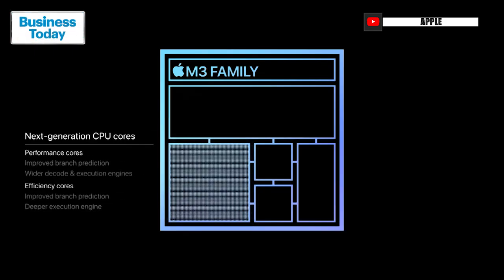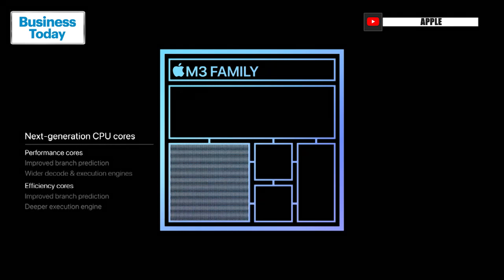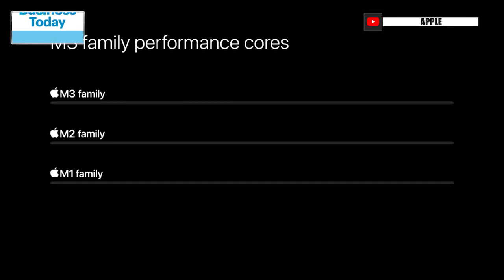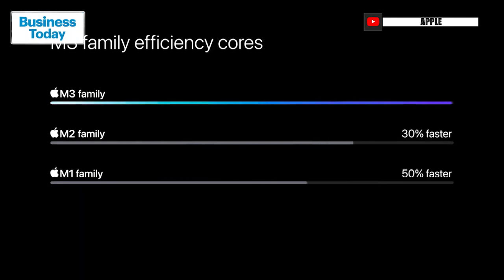This is a monstrous improvement for the most demanding graphics tasks, and this new GPU architecture is a breakthrough that will bring a whole new level of graphics performance to the Mac. The M3 family's next-generation performance cores are up to 30% faster than the M1 family while maintaining their fantastic power efficiency, and the efficiency cores take an even bigger leap — up to 50% faster for many typical tasks.